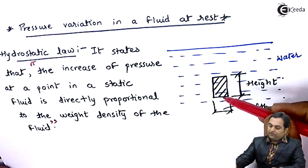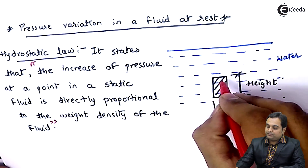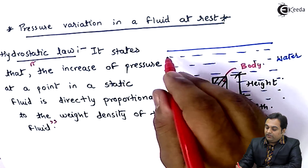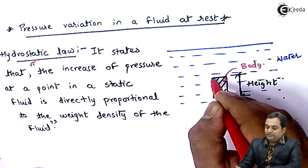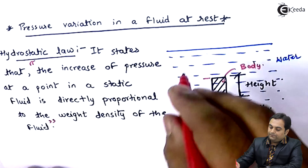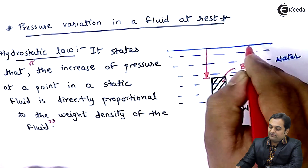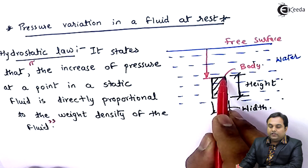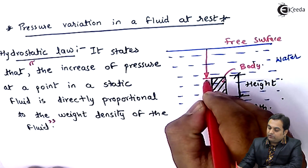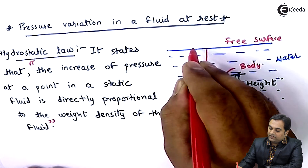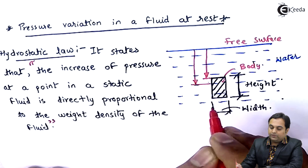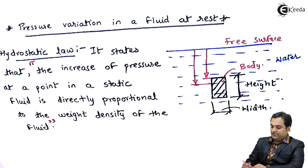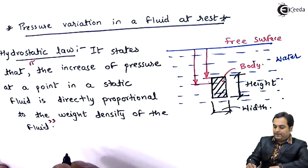It means if we want to find out how much is the pressure acting on this body along the depth — here if we go deep into this water and reach this element at a certain height from the free surface, at the top end of the body we have a value of pressure. If we go on increasing the height from the free surface, that is going deeper into the water, the pressure intensity is directly proportional to the weight density of the fluid.